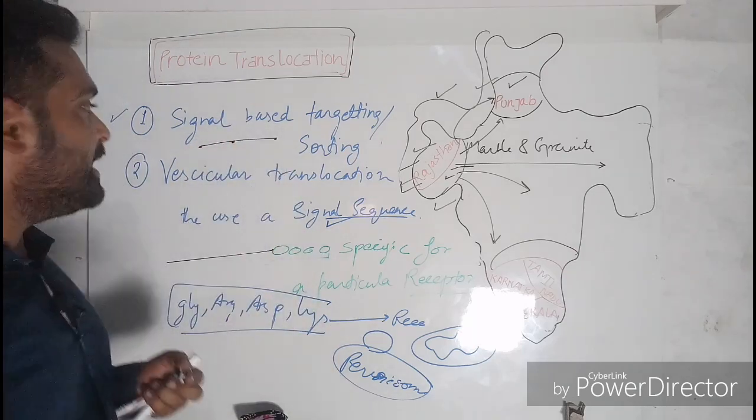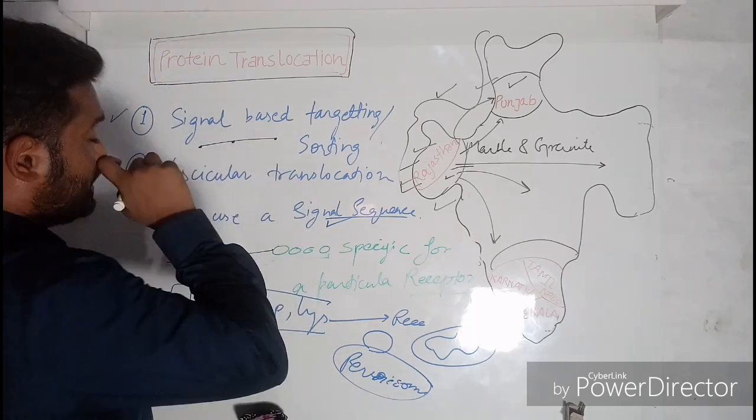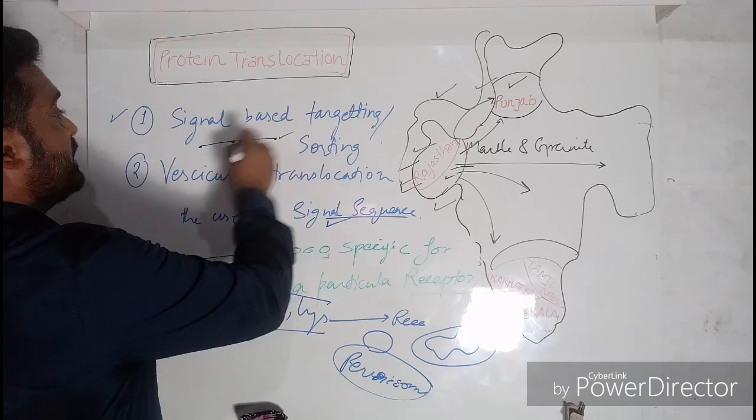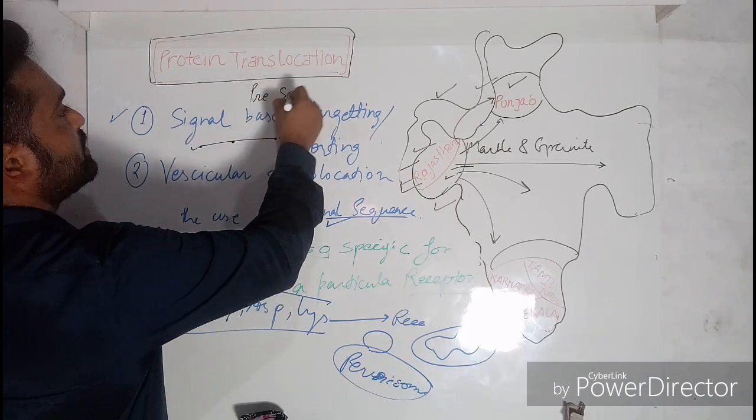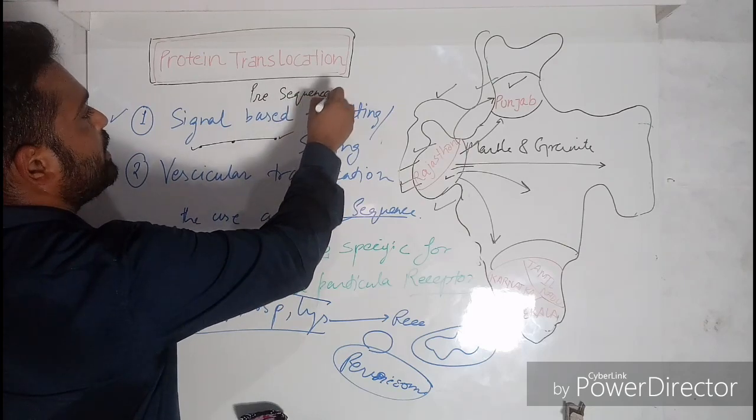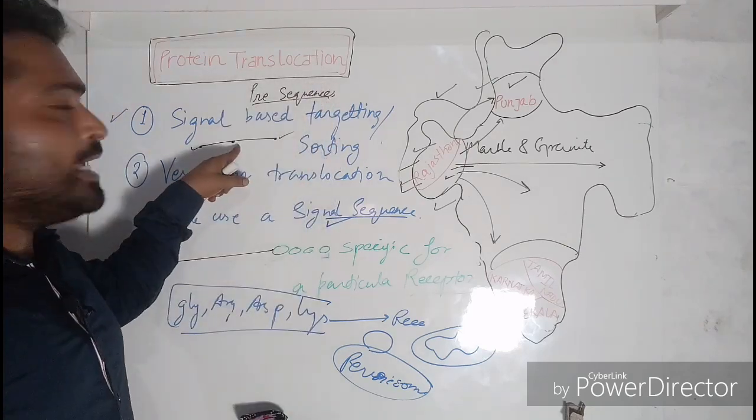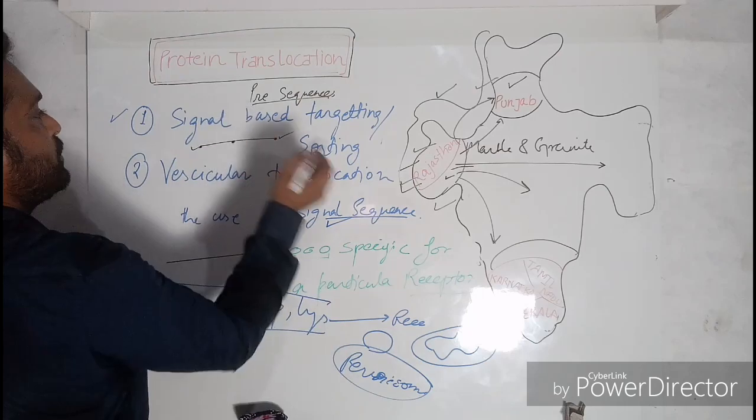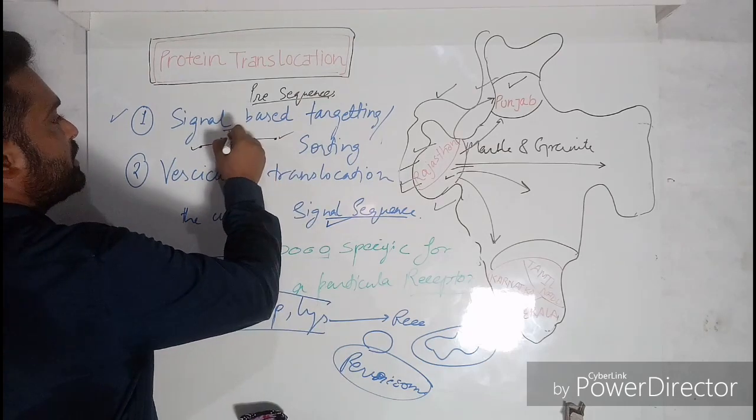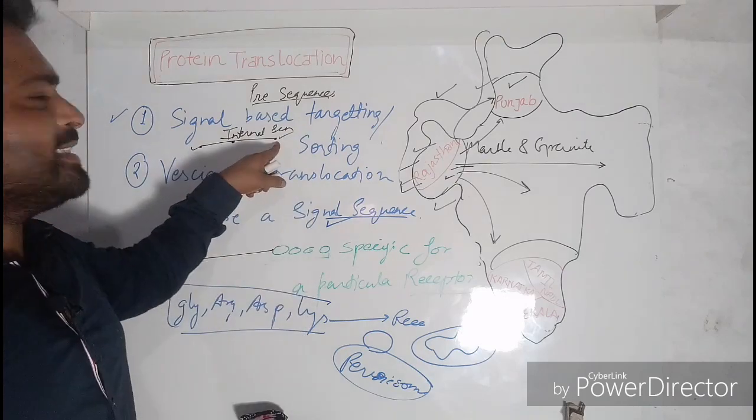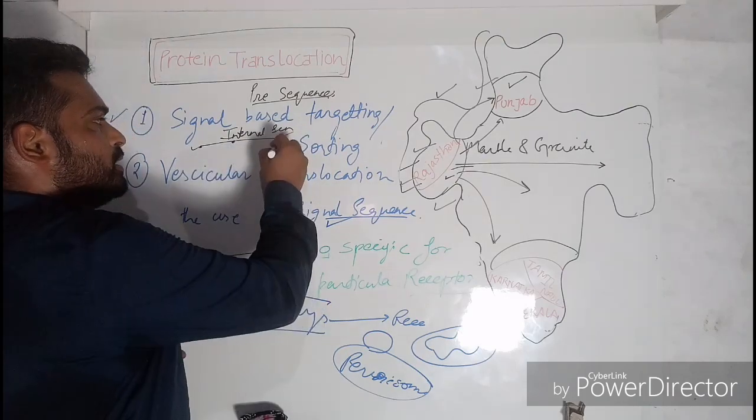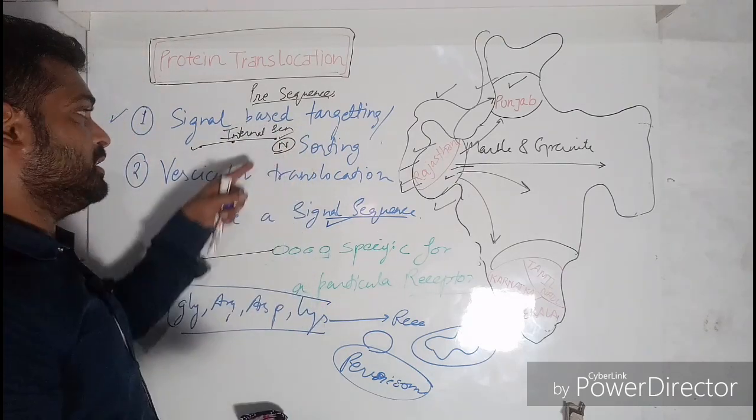So on the basis of these locations, the sequence, if it is present on the terminals, this is referred to as pre-sequences. And if it is present on the inside, then it is referred to as internal sequence. Mostly this is located at the end terminal of this protein. Very rarely we find it on the inside of the protein.